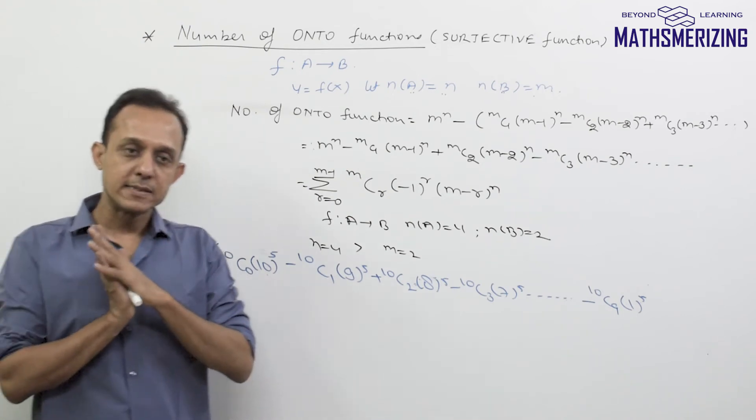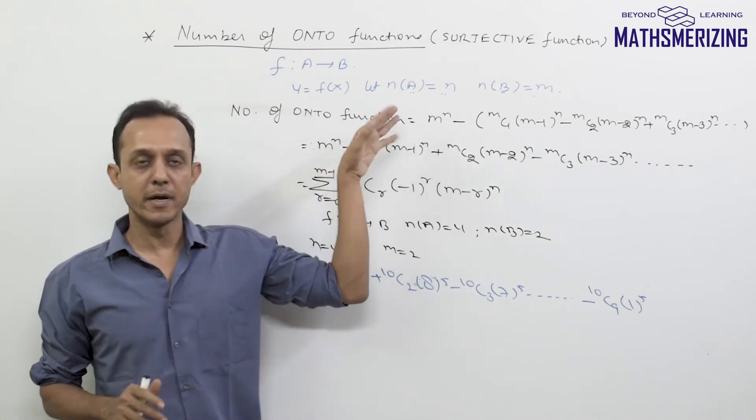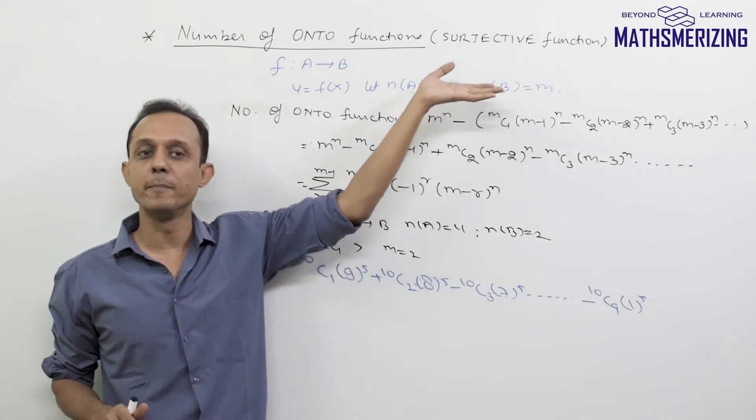Now the question still remains, why are we discussing this formula here in binomial theorem and not in functions or permutations and combinations?